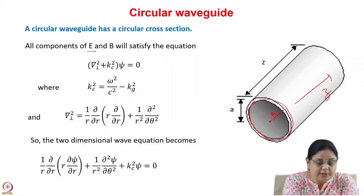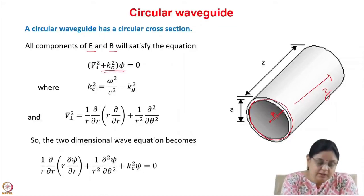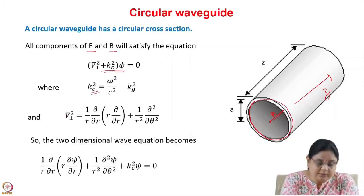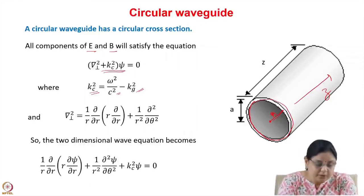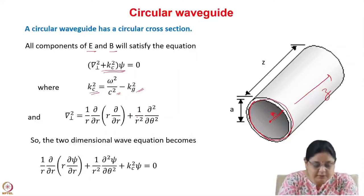All components of the electric field and magnetic field will satisfy the wave equation, where del perpendicular is the transverse del and kc squared is equal to omega squared by c squared minus kg squared.